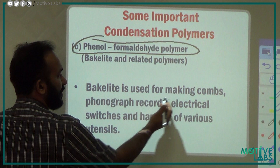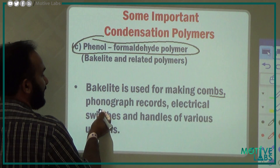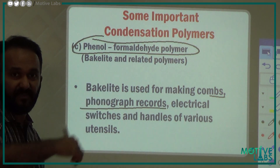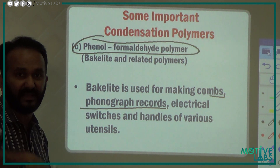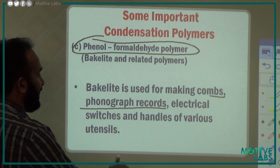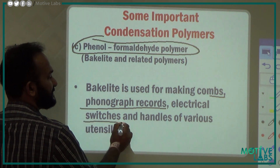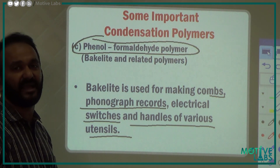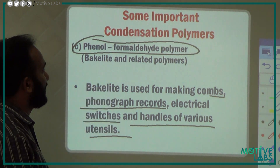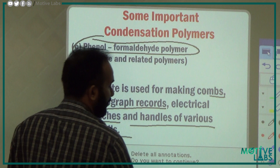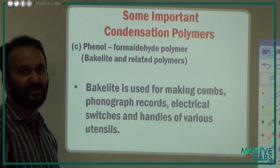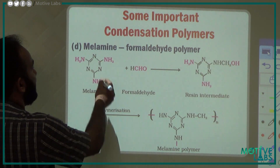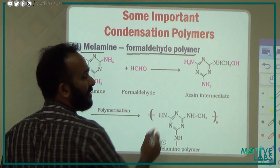Bakelite is used for making combs, phonograph records, discs, electrical switches, and handles for various utensils.